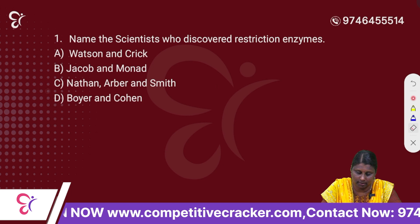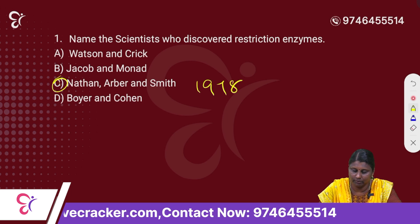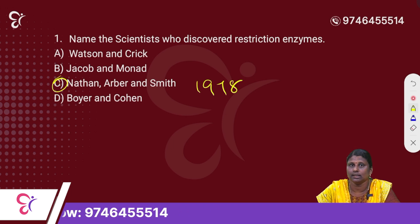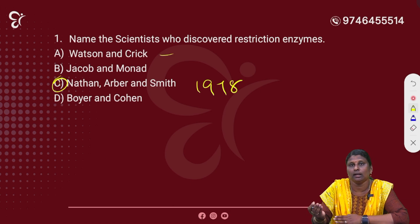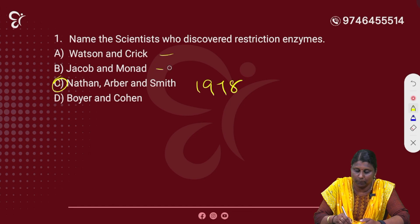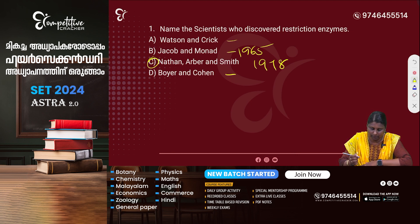The correct answer is Option C: Nathan, Arbor and Smith. In 1978, they were awarded the Nobel Prize for the discovery of the Restriction Enzyme and Molecular Genetics. Watson and Crick discovered the double helix. Jacob and Monad, in 1965, were awarded the Nobel Prize for the Operon structure. Boyer and Cohen are associated with the study of Recombinant DNA Technology.